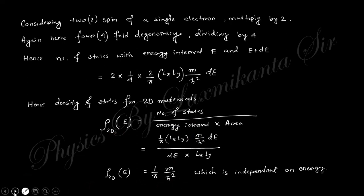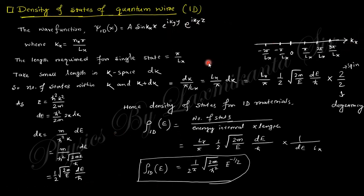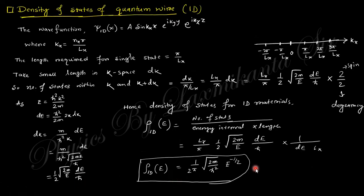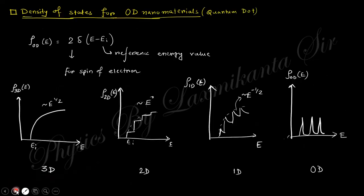For 1D material, the unit in k-space is a line element of length 2dk, and a single state occupies π/Lx. Multiply by two for spin and by two for twofold degeneracy. Converting k to energy, the 1D density of states goes as E^(-1/2). For 0D material, the density of states is a delta function. Summarizing on a single graph: 3D DOS goes as √E, 2D DOS is a constant staircase, 1D DOS diverges as E^(-1/2), and 0D DOS is a series of delta functions.